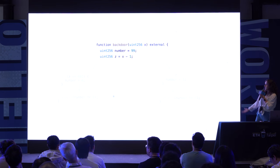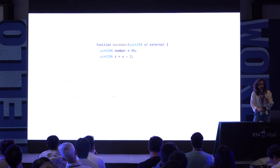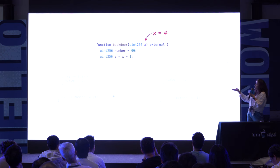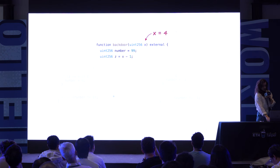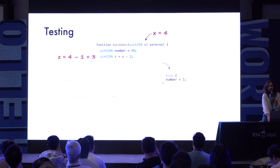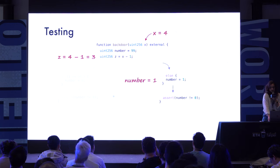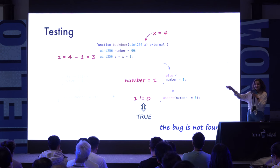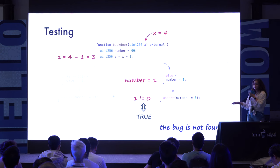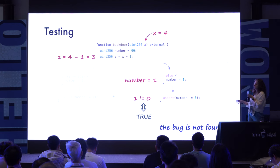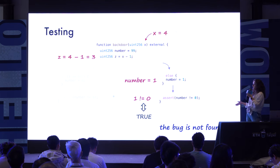What techniques can we use to identify this issue? We can try executing the code with a concrete value, for example X equals 4. That corresponds to unit testing. If X is 4, then Z is 4 minus 1, which is 3. 3 is not equal to 691, so we take the else branch, number is 1, 1 is not equal to 0, the assert is not violated, and the bug is not found — even though we know it would be violated in the true branch. That highlights the limitations of unit testing: it provides limited information about different states the smart contract can end up in.